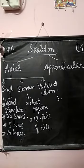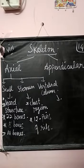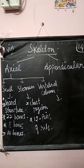Today we move on to see the parts of the skeleton. As I already told you, the skeleton is divided into two major parts: the first one is the axial skeleton and the second one is the appendicular skeleton. Today we are going to see only about the axial skeleton.